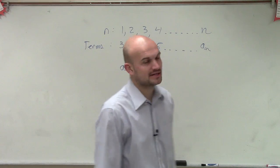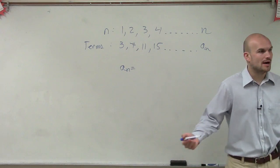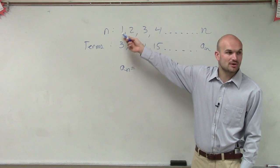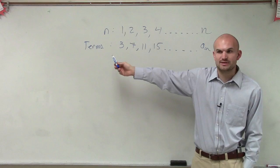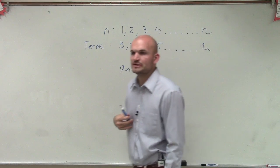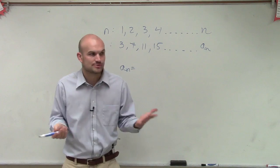So in doing this, it's first always nice to look at how I'm going from the number of my term to what the value of the term is. You could say 1 to 3, you're adding 2, right? And it's always easiest to look in an arithmetic way. What am I adding or subtracting?